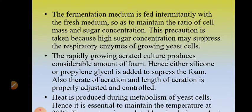The fermentation medium is fed intermittently with fresh medium. In the fermentation tank, you continuously add fresh medium to maintain the ratio of cell mass and sugar concentration. Since the organism itself is your product, the organism must get nutrients until it is multiplying. To maintain sugar concentration and cell mass, you feed the production tank with fresh medium intermittently. This precaution is taken because too high a sugar concentration at one time may suppress the respiratory enzymes of growing yeast cells. So, you add medium intermittently so that sugar is steadily available, not at high concentration all at once.